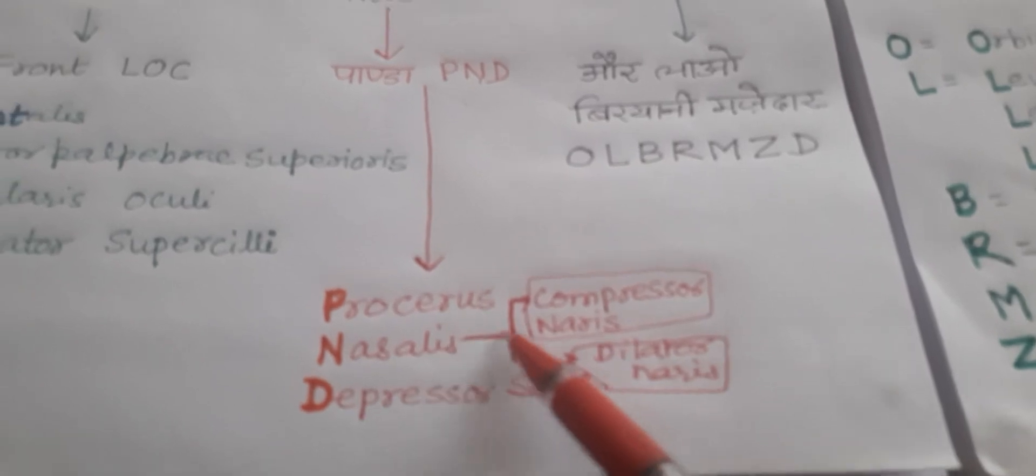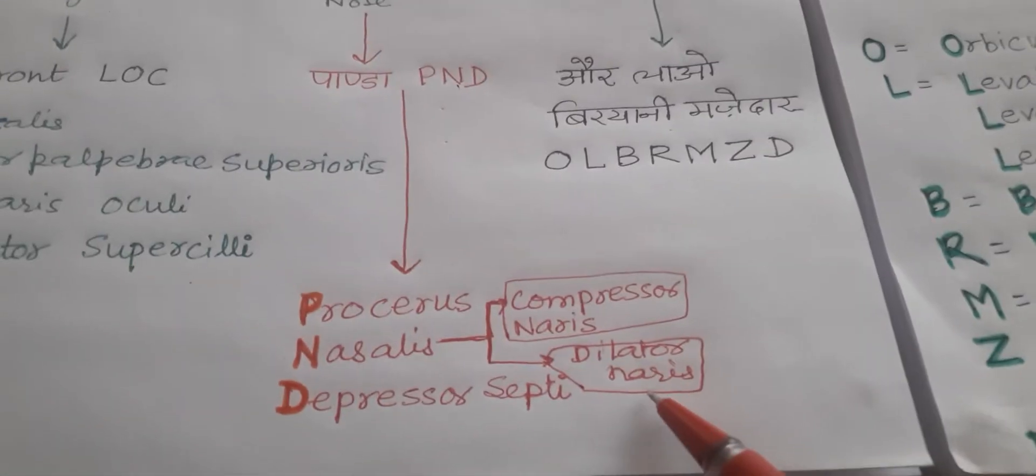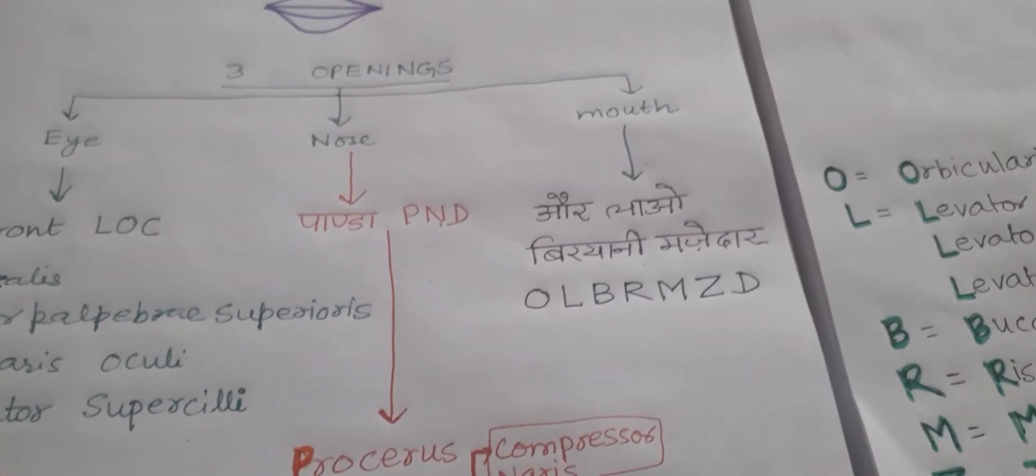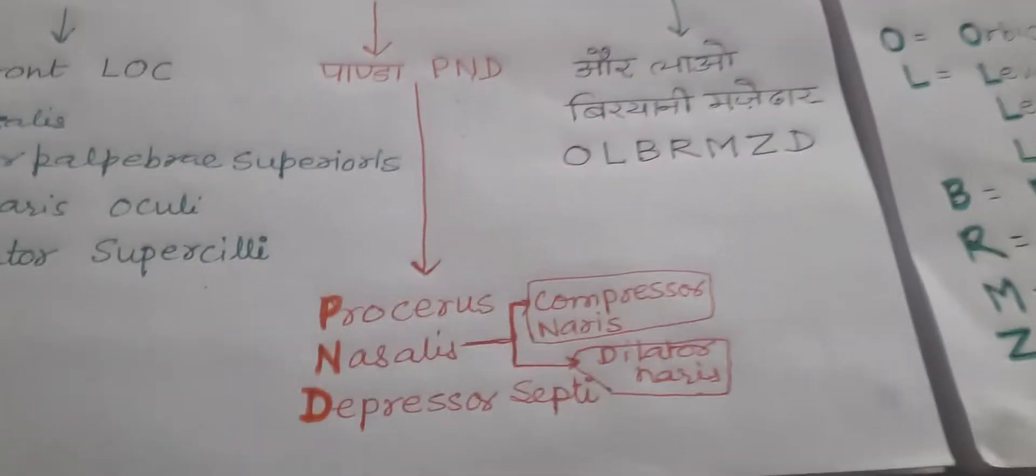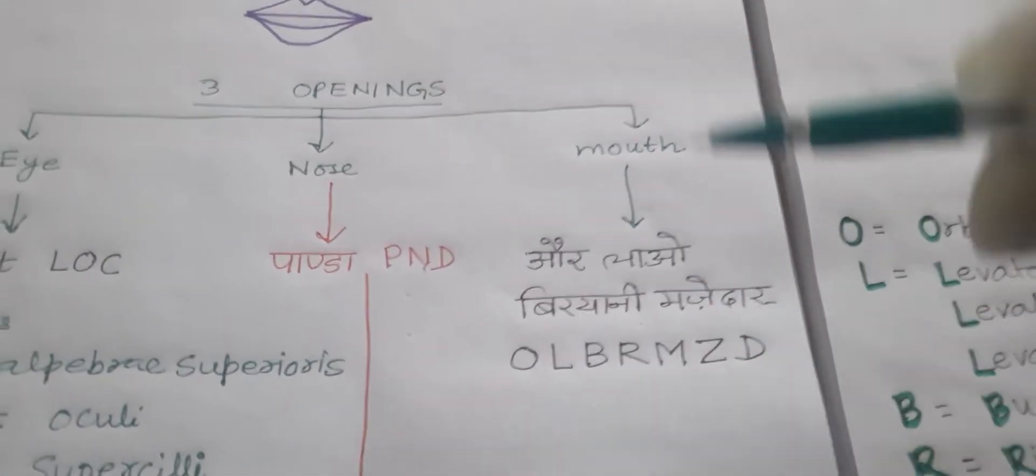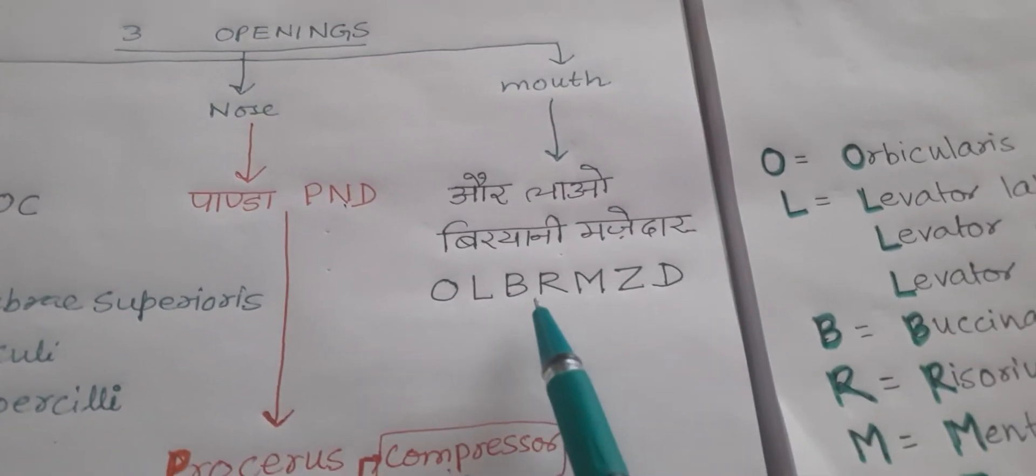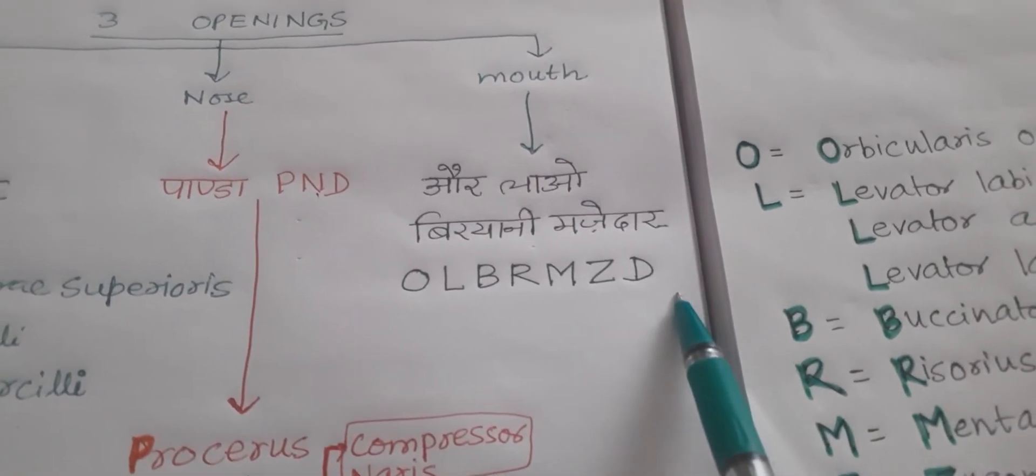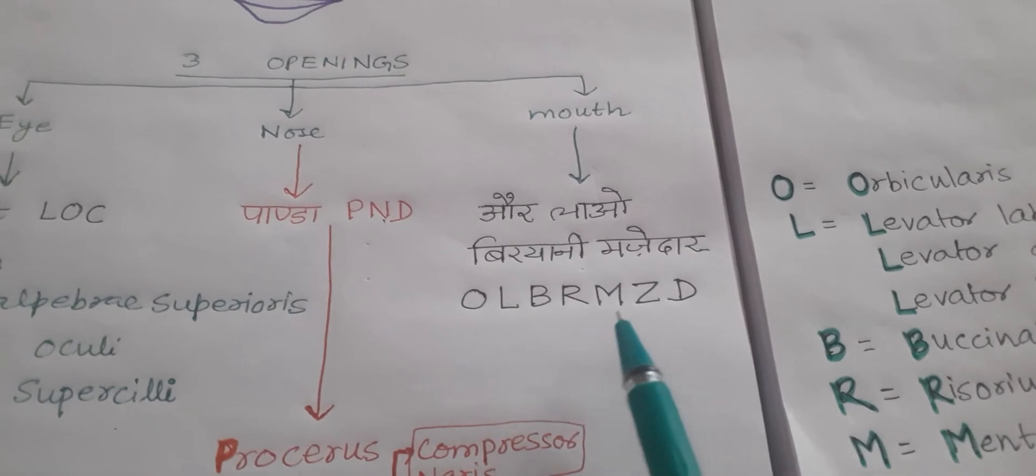Nasalis divided into two parts: compressor naris and the dilator naris. Now come to third one, the muscles around the mouth. Or lau biryani majadar - the mnemonic is or lau biryani majadar.